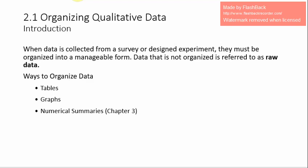Recall that qualitative, or what we call categorical data, provide measures that categorize or classify an individual. When data is collected from a survey or designed experiment, they must be organized into a manageable form. Data that is not organized is referred to as raw data.